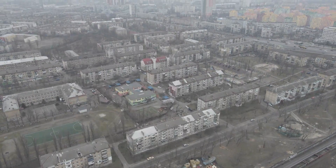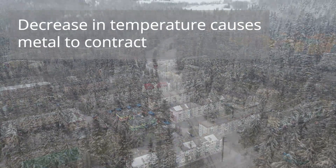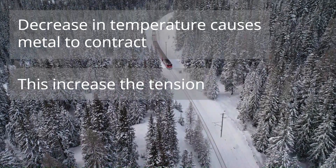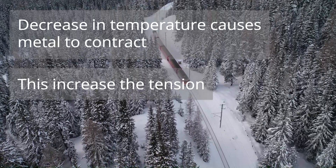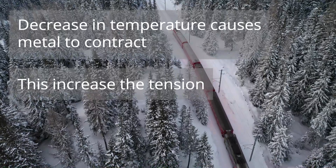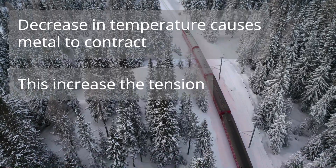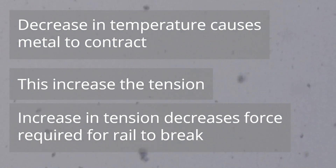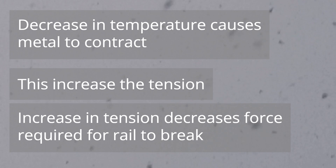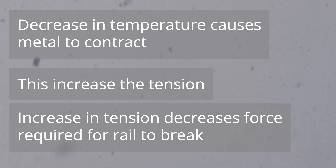However, when the temperature drops and the metal contracts, the tension in the rail increases. When the tension increases, this in turn increases the likelihood of the metal breaking. The more tension that is in the rail, the less force is required to break it. Combine this with another factor, such as an internal defect that has already weakened the structure of the metal, and this combination leads to a break.